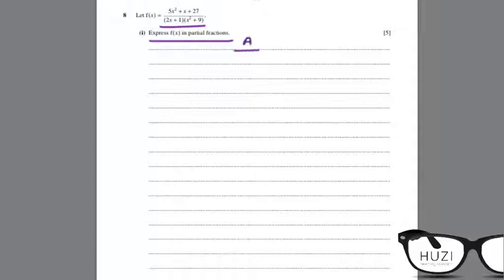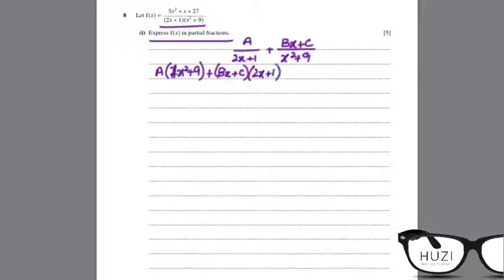So this would be a over 2x plus 1 plus bx plus c over x squared plus 9. So a times, sorry it's just x squared, plus bx plus c times 2x plus 1 equals to 5x squared plus x plus 27.